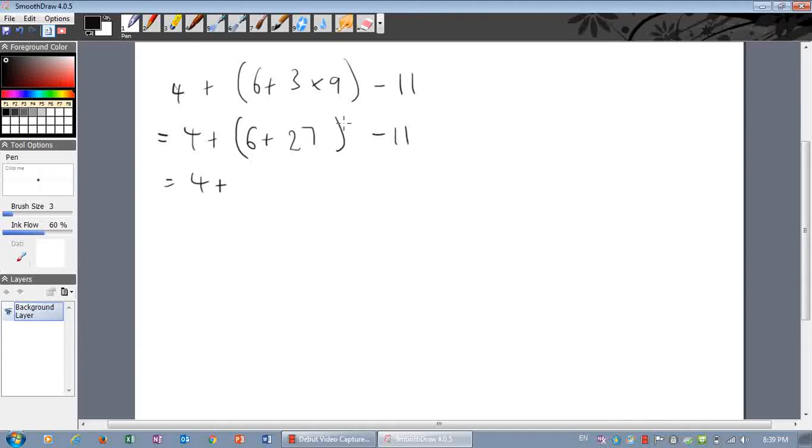4 plus, now we still need to take care of the brackets. 6 plus 27 is 33 minus 11. And then all we've got now is adding and subtracting, so we just do that. 4 plus 33 is 37 minus 11. And 37 minus 11 is 26.